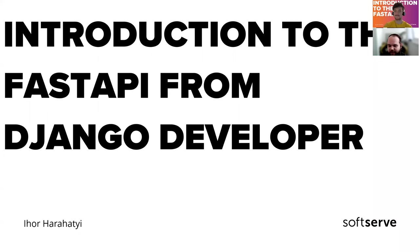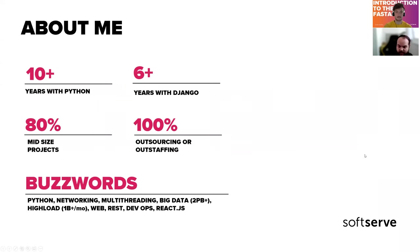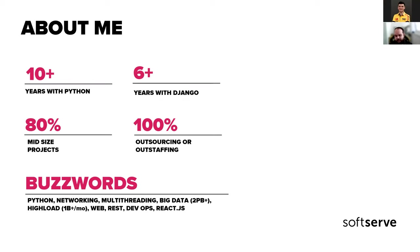Everyone, glad to see you even online, and thank you for joining my presentation. It will be an introduction to FastAPI from a jungle — a Django — developer. So let's talk about me: I have more than 10 years with Python, it's my main programming language, but I also worked with different technologies like JavaScript, C, or Java and many others.